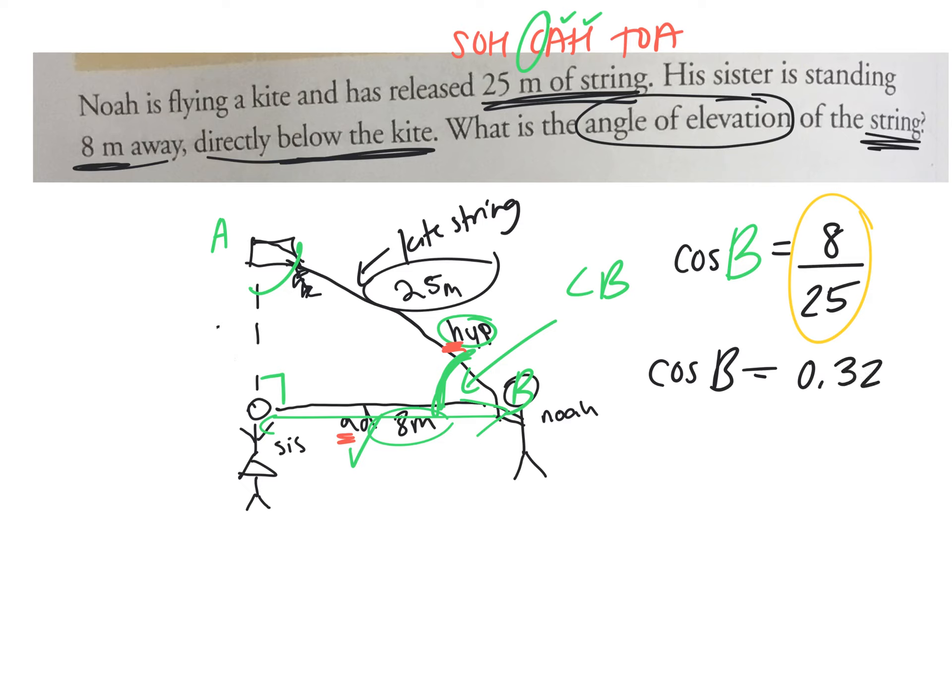We're trying to find the angle, so you have to have second or shift cos 0.32 equals—what is angle B equal to? 71. Approximately 71 degrees.